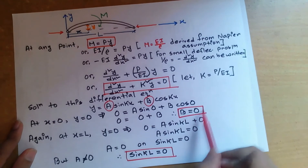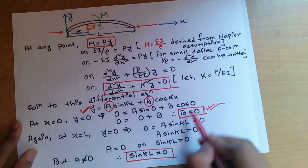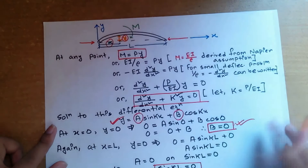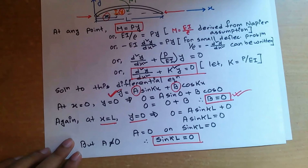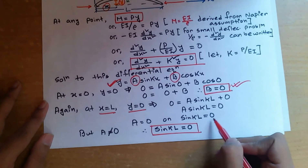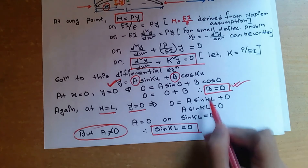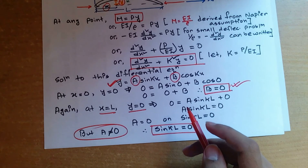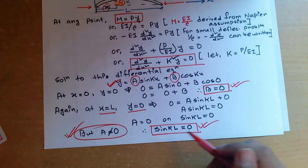Applying the first boundary condition at x = 0 and y = 0: 0 = A·sin(0) + B·cos(0), so B = 0. Applying the second boundary condition at x = L and y = 0: 0 = A·sin(kL) + 0, giving A·sin(kL) = 0. Either A = 0 or sin(kL) = 0. But A cannot be 0 because that would make y = 0, meaning a straight column, whereas our column is slightly deflected. Therefore, sin(kL) = 0.